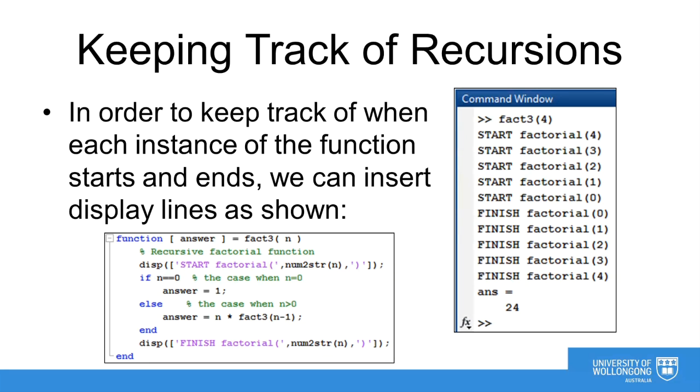Now, when we run this program with an example of n equals 4, we get this output. Notice that the first call from the command prompt generates the line that we have started the factorial function with n equals 4.